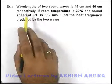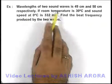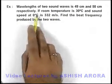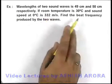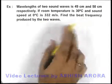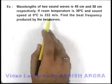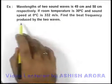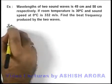In this example, we are given that wavelengths of two sound waves are 49 and 50 centimeters respectively. It is saying if room temperature is 30 degrees centigrade, and sound speed at zero degrees centigrade is 332 meters per second, we are required to find the beat frequency produced by the two waves.